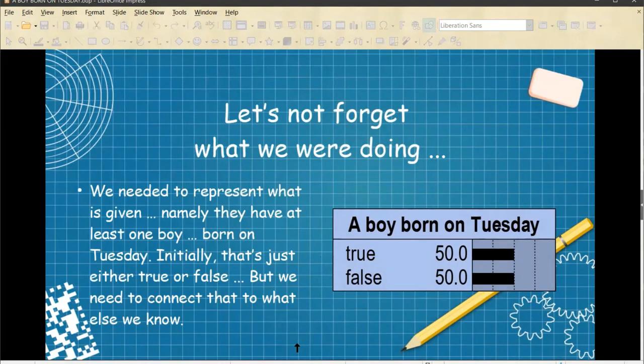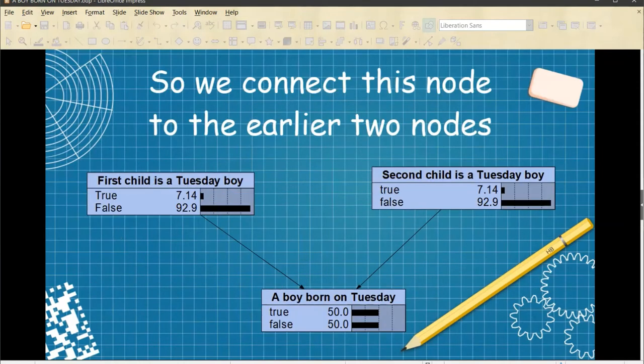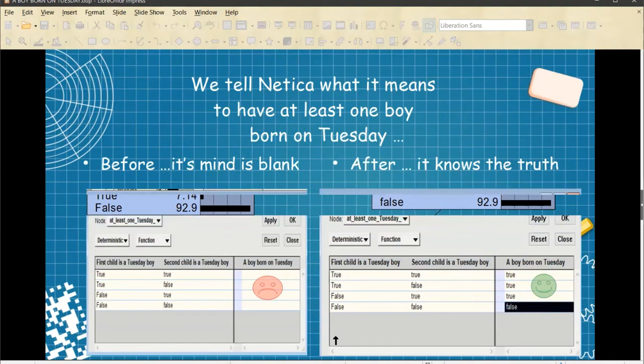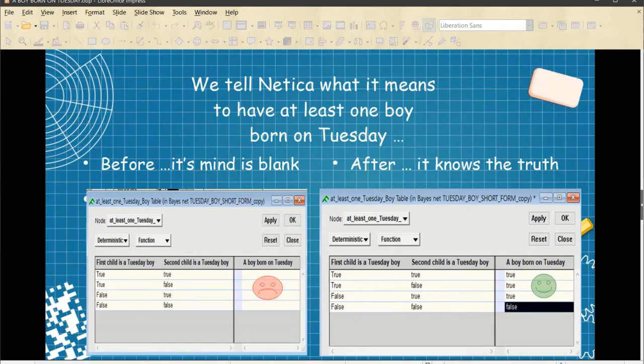Let's not forget what we were doing. We needed to represent what is given. Namely, they have at least one boy born on Tuesday. Initially, that's just either true or false. But we need to connect that to what else we know. So we connect this node to the earlier two nodes. And we say, if the first child is a Tuesday boy to some degree, and the second child is a Tuesday boy to some degree, then there will be at least one boy born on Tuesday to some degree. But we need to teach it a bit about what that means. So once more, we do some brain surgery.